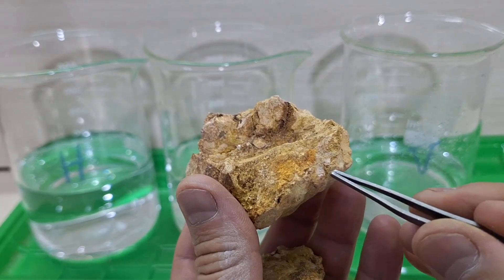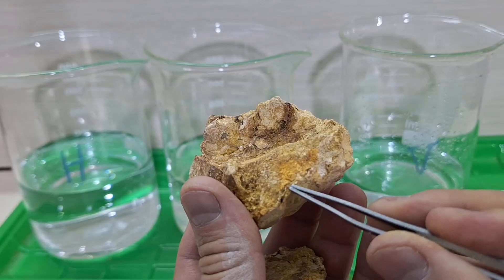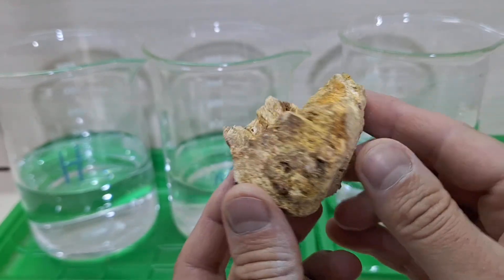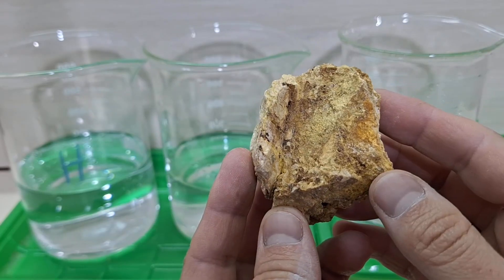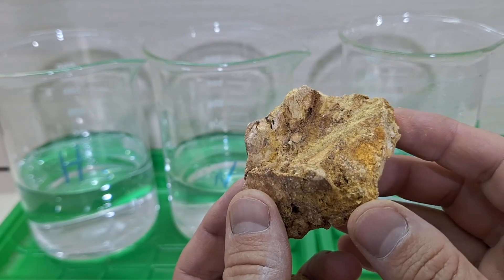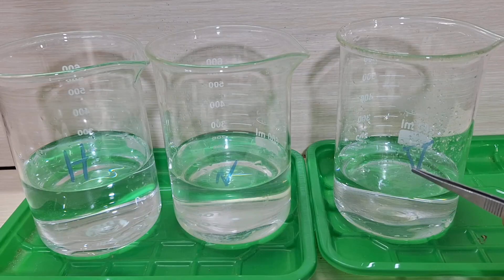Limestone and carbonates neutralize the acid. Instead of attacking the gold, the acid first reacts with the carbonates. And by the time it's done with them, it's too weak to dissolve the gold.